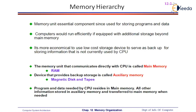When it comes to the memory hierarchy, the memory unit is an essential component used for storing programs and data. If you want to execute a program, that program first needs to be stored in the memory unit. Computers would run more efficiently if equipped with additional storage beyond the main memory. When it comes to the CPU, it just holds main memory — and the main memory is very small.